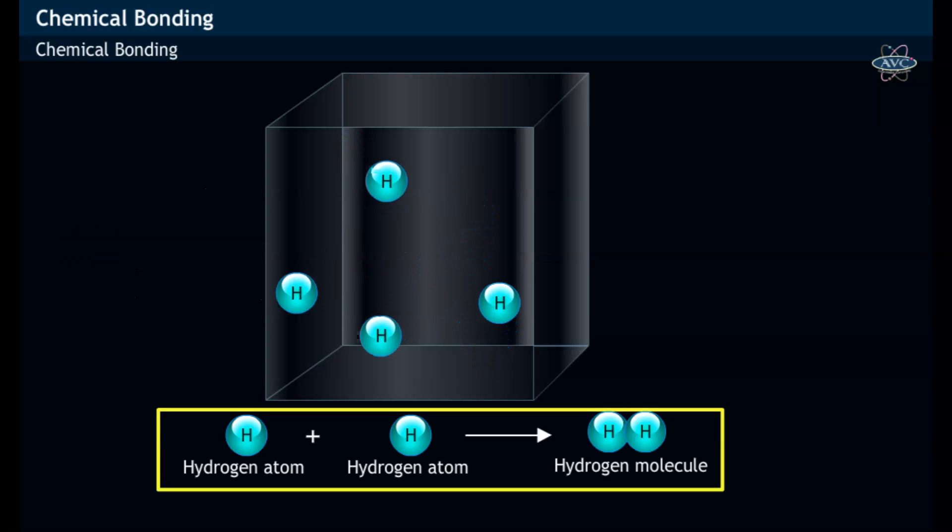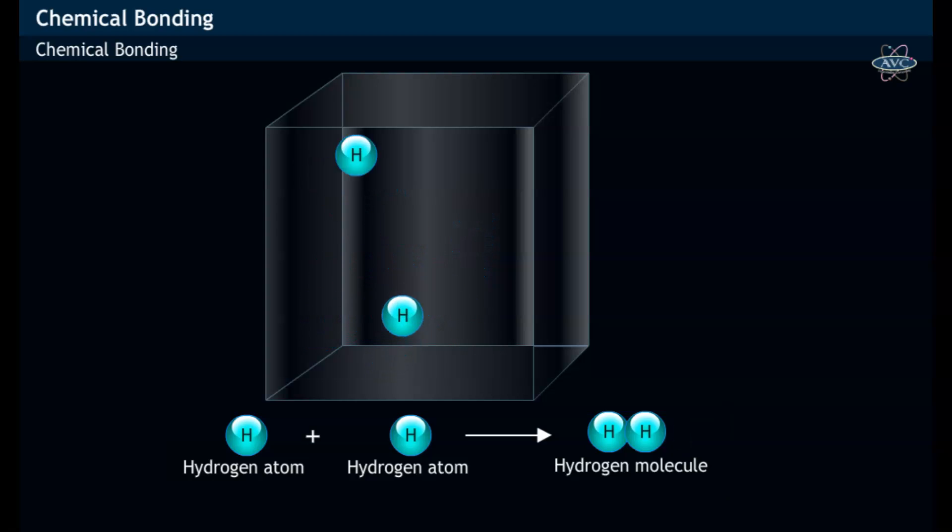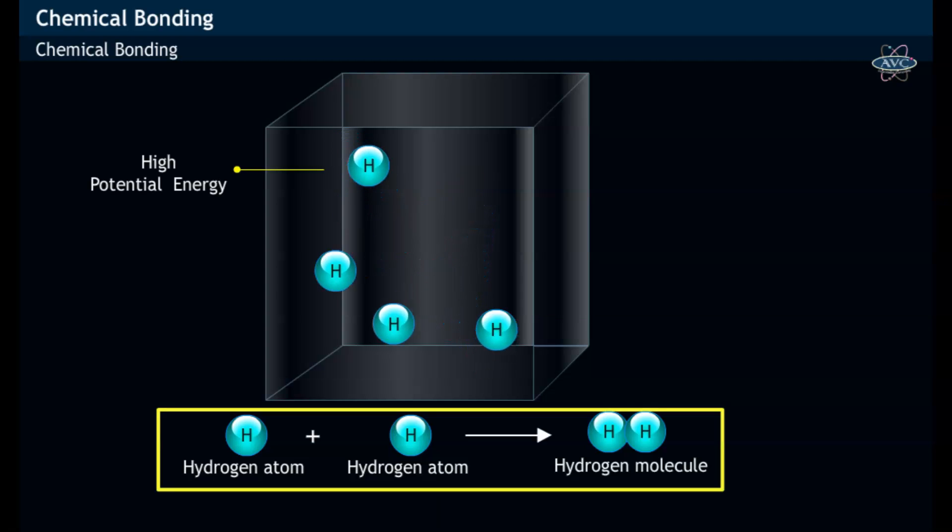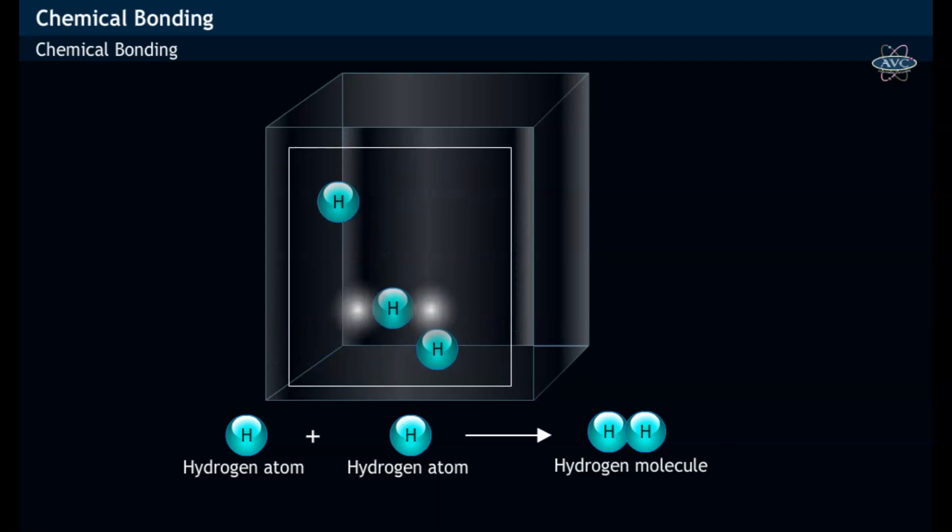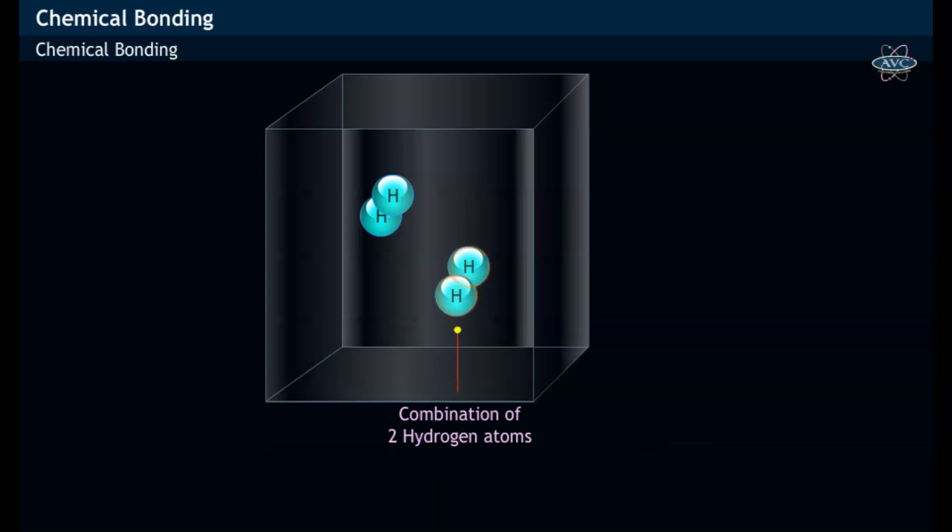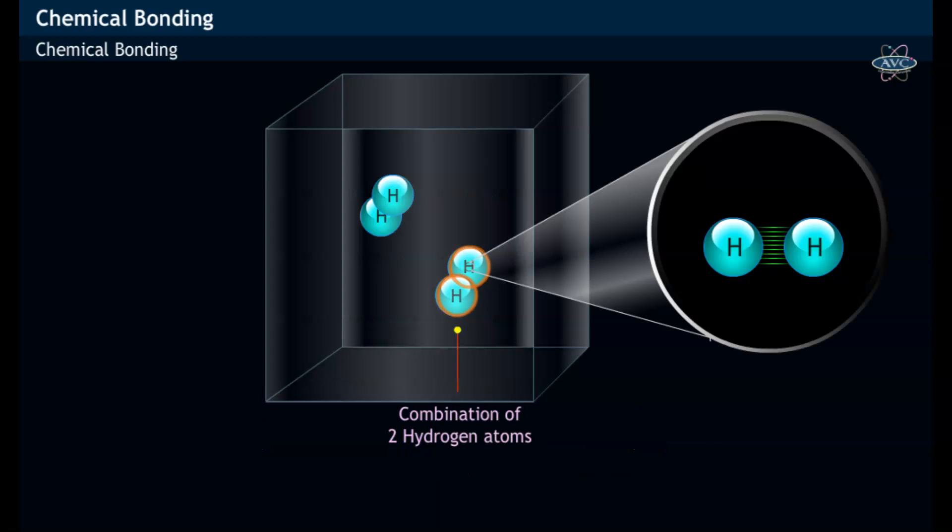Let us consider the formation of hydrogen molecule present in hydrogen gas. The two hydrogen atoms in their original state have high potential energy. When two hydrogen atoms combine with each other, a chemical bond is formed between the two atoms and thereby forms a hydrogen molecule.